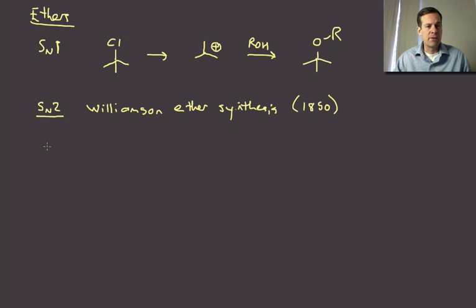It turns out that this is still the state of the art for how to form ethers. So not a lot has changed in that time. And basically, this is something we've already talked about. What you're going to do in the Williamson Ether Synthesis is to take an alcohol and you're going to convert it to its alkoxide.